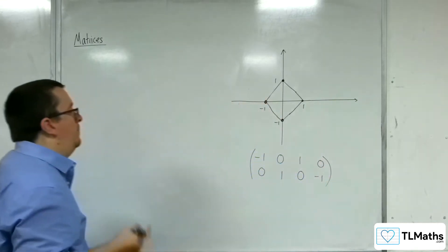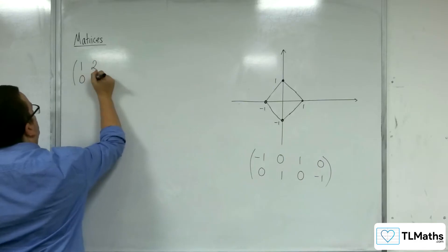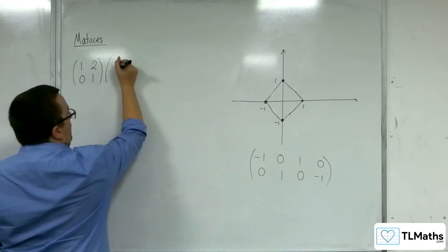And what we're going to do is we're going to apply the matrix 1, 2, 0, 1, and we're going to see what happens.